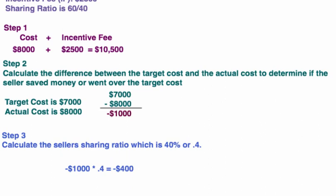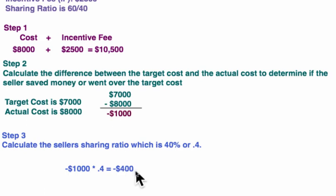Step number three: calculate the seller's sharing ratio, which is 40% or 0.40. We multiply the $1,000 overrun times 0.40 to get negative $400 — that is $400 we will be subtracting from their payment.